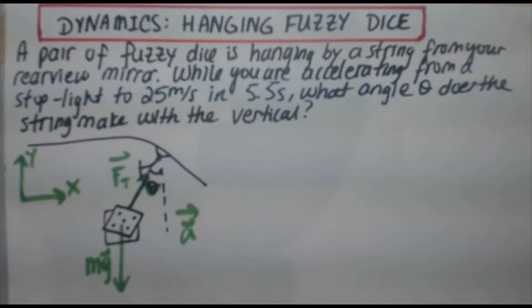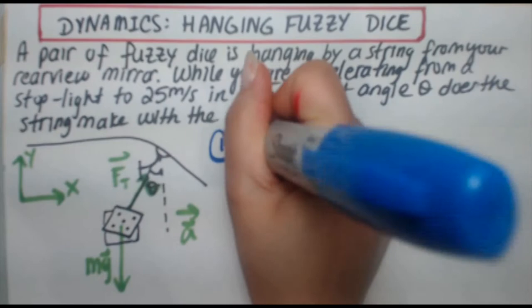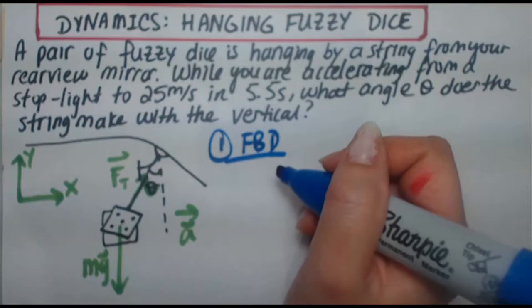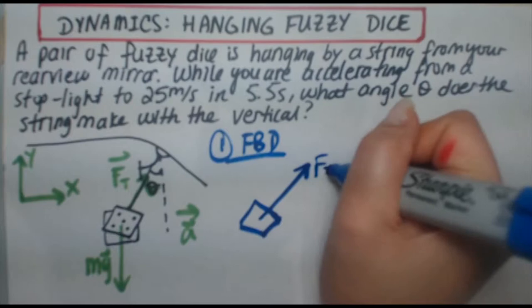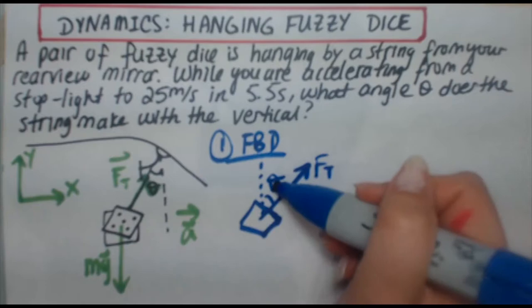So first things first, let's draw a free body diagram. Now although they have provided us with the picture here, I want to draw another one simply with forces, and less complicated than this. So I'm going to draw my dice. I have my tension force going off to the side here, FT, and this is making an angle theta with the vertical.